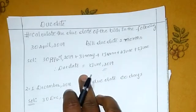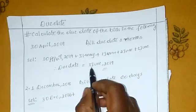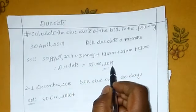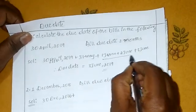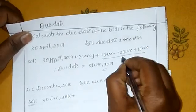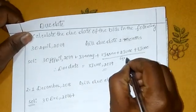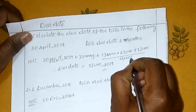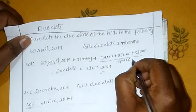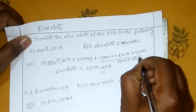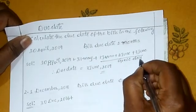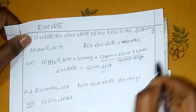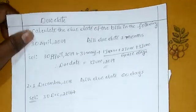The maturity date of the bill is 3rd June 2019. These 3 grace days are added, so the due date becomes 3rd June 2019.